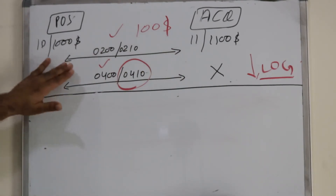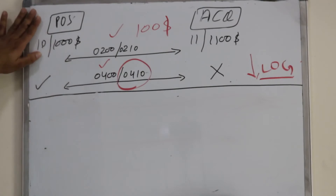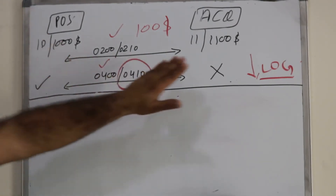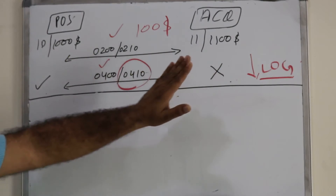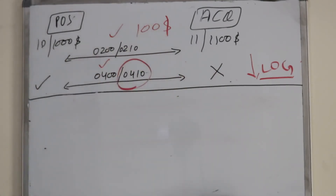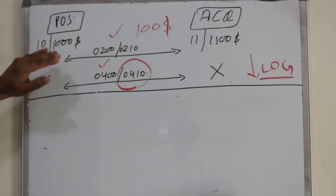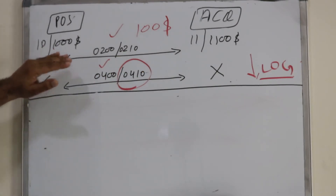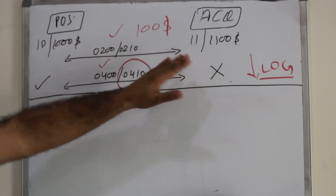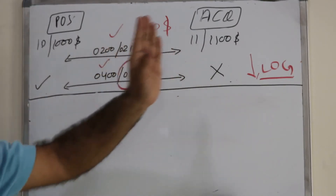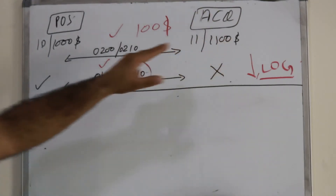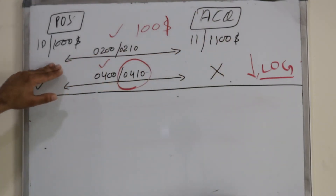The POS device sent a 0100 message request to the acquiring bank for $100. The acquiring bank approved the transaction, got approval from the issuer, and sent a successful response back to the POS. Once approved, both the acquiring bank and the POS machine had the $100 transaction.